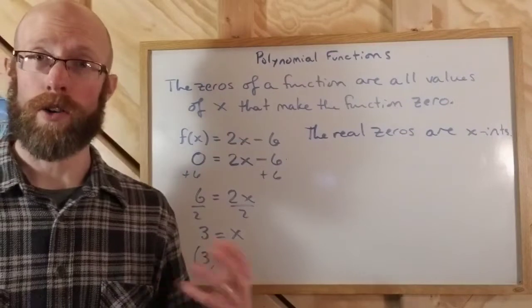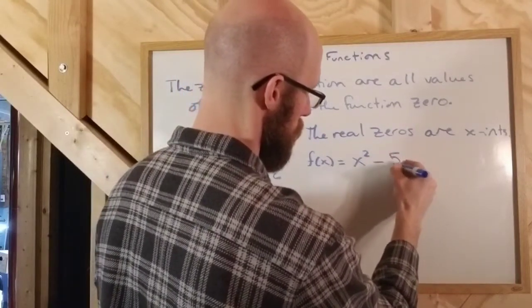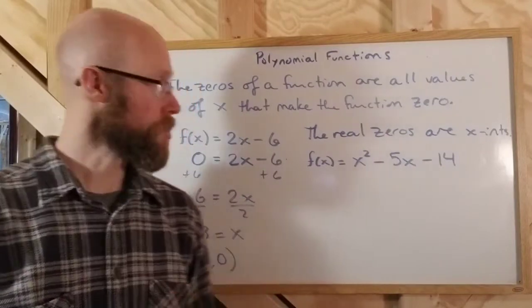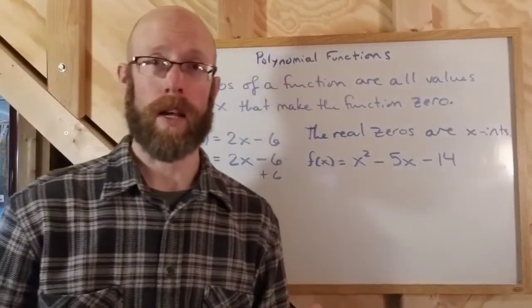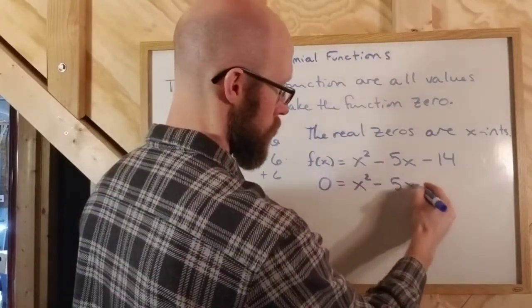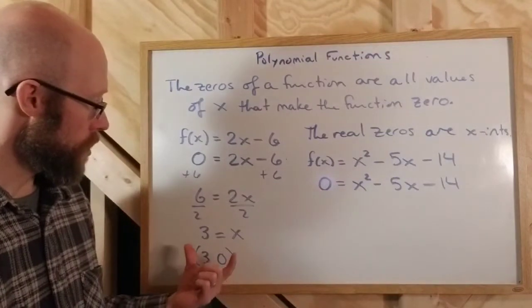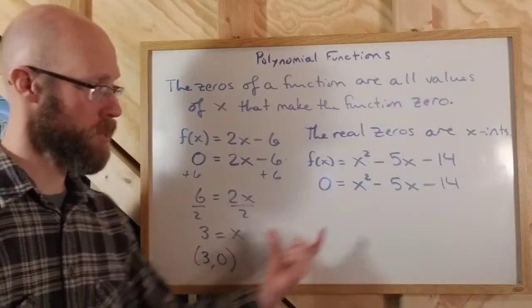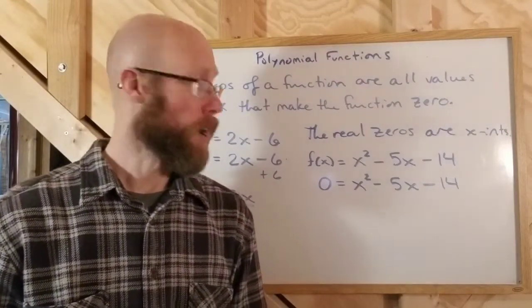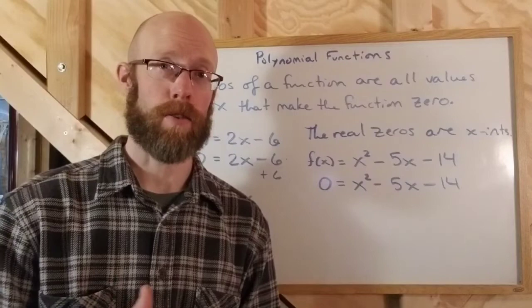If I take a quadratic polynomial, let's say f(x) = x² - 5x - 14, this is a quadratic polynomial and it also has zeros — they could be complex or real. To find them, you set the output equal to zero and solve for x. The problem with a quadratic equation is that you can't straightforwardly solve for x because of the x squared. You have to use a different technique. In our study of polynomials, it's very important to be able to factor and utilize something called the zero factor property.